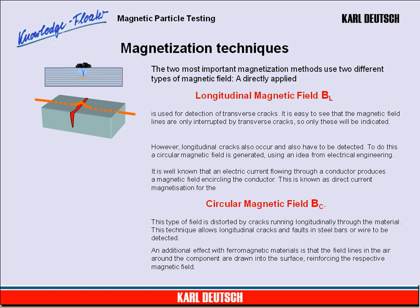Magnetization Techniques. The two most important magnetization methods use two different types of magnetic field. A directly applied longitudinal magnetic field is used for the detection of transverse cracks. It is easy to see that the magnetic field lines are only interrupted by transverse cracks, so only these will be indicated. However, longitudinal cracks also occur and also have to be detected.